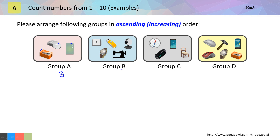In group B we have one, two, three, four, five — five objects. In group C we have one, two, three, and four — four objects. And in group D we have one, two, three, four, five, six — six objects.